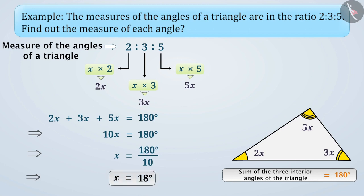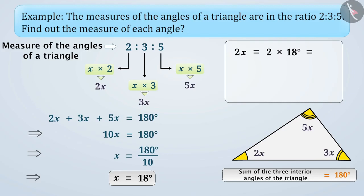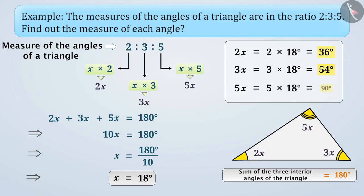Since we have found out the value of x, now we can find the measures of the angles of the triangle. 2x is equal to 2 multiplied by 18 degrees, which is equal to 36 degrees. 3x is equal to 3 multiplied by 18 degrees, which is equal to 54 degrees. 5x is equal to 5 multiplied by 18 degrees, which is equal to 90 degrees. Therefore, the measures of the angles of the triangle are 36 degrees, 54 degrees, and 90 degrees.